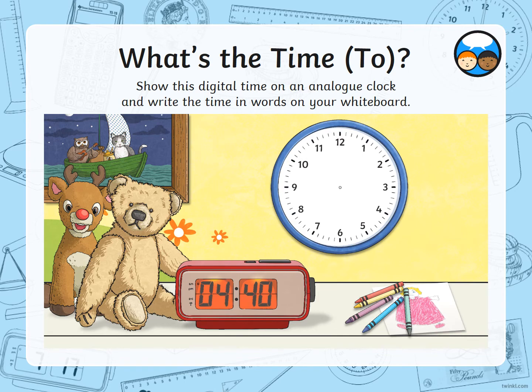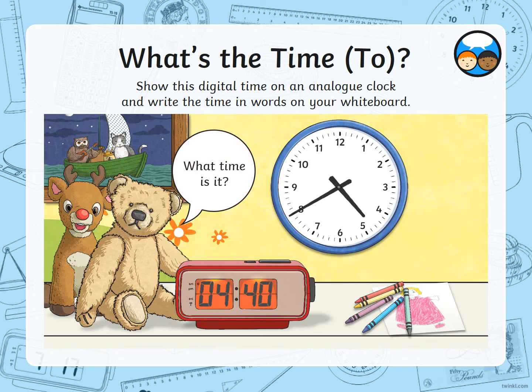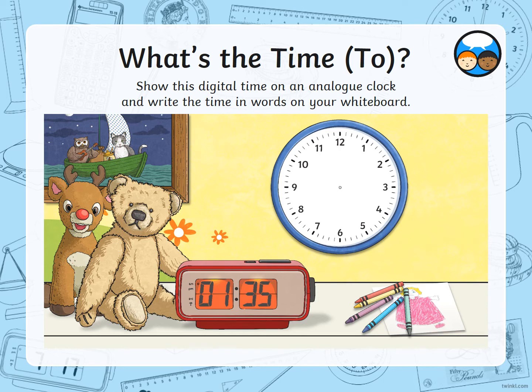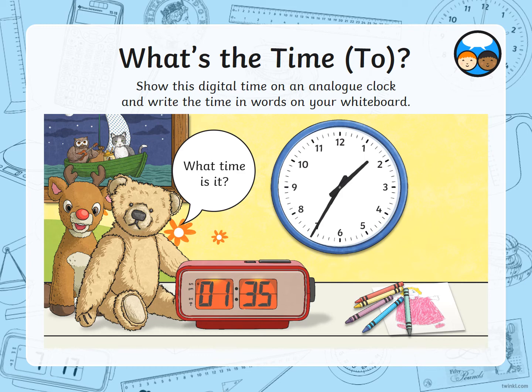What we want you to do now is look at how you would represent the digital time on an analogue clock. So we know that it is 1:35. On the analogue clock, you can see the small hand — the hour hand — is just past the 1. It says 35 minutes has gone past, so remember we count round the edge in 5s.